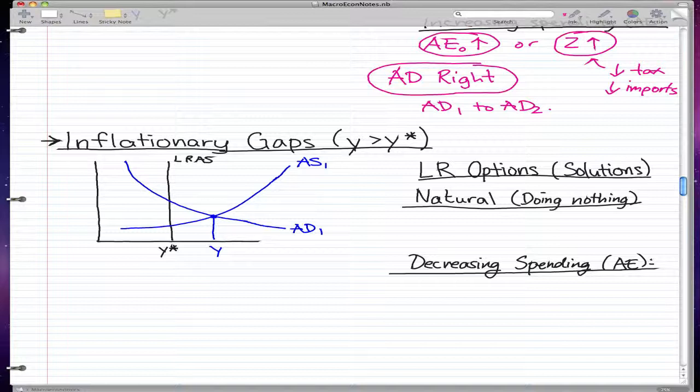Inflationary gaps are pretty much the same thing, except that it's the opposite of recessionary gaps. Again, the first solution of getting back to equilibrium is doing nothing, and by doing nothing, we can let factor prices increase.